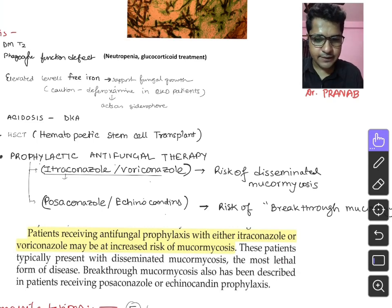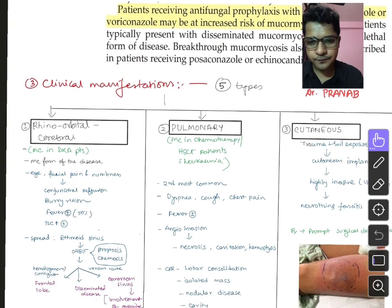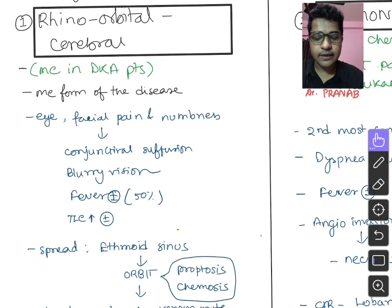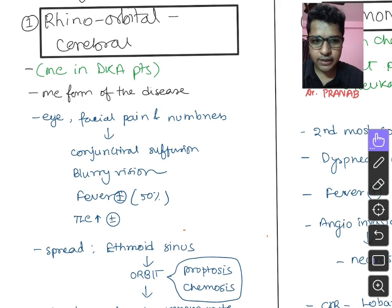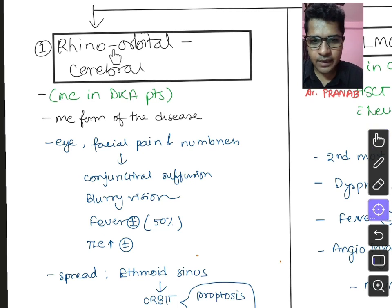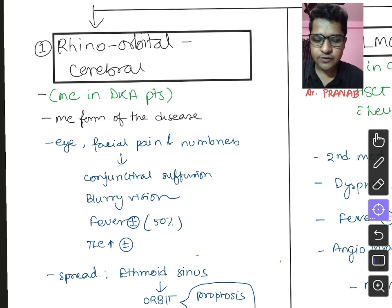Moving on to clinical manifestations: there are five types of mucormycosis. The most common is the rhino-orbital-cerebral type, mostly seen in DKA patients and those who develop DKA during COVID-19 treatment with steroids. 'Rhino' means nose and paranasal sinuses, 'orbital' means the eye and surrounding structures, and 'cerebral' means it can extend to the brain. It is the most common form and can involve the nose, PNS, eye, and even CNS.